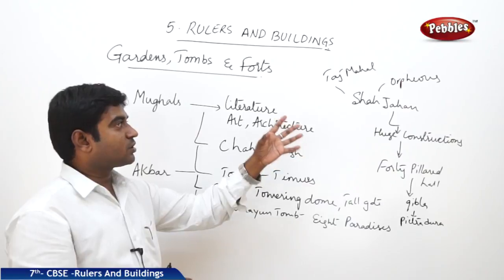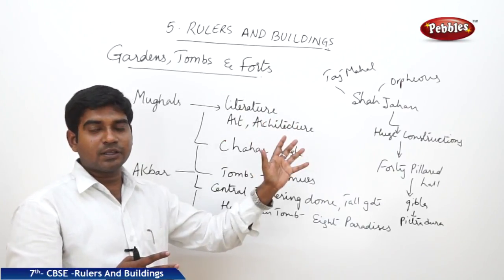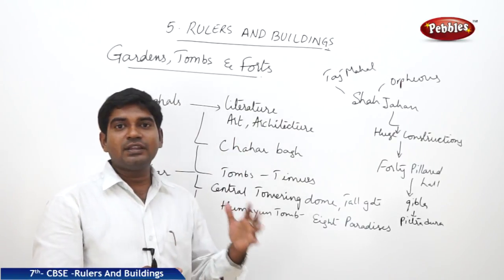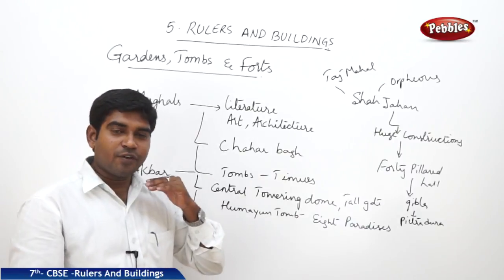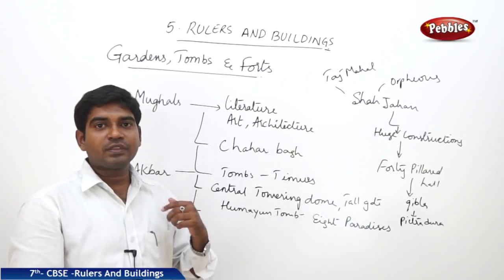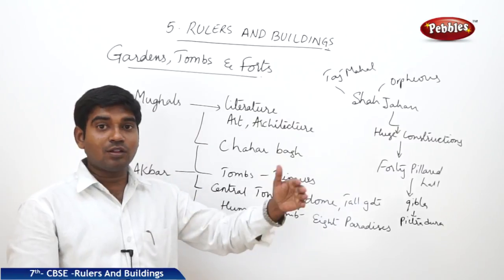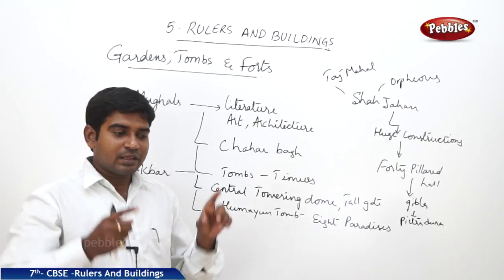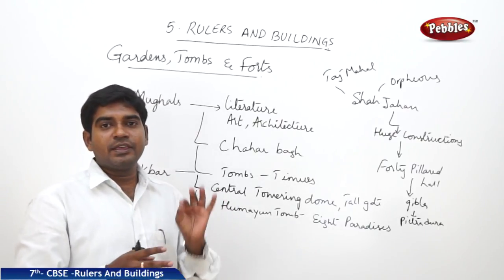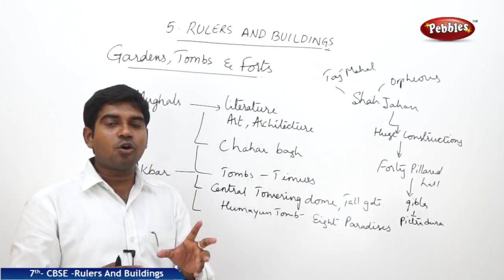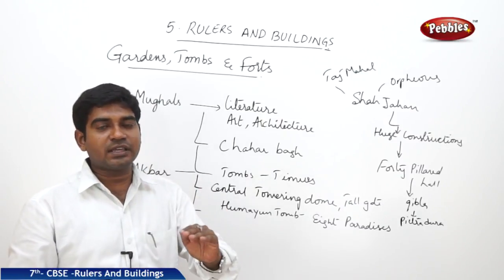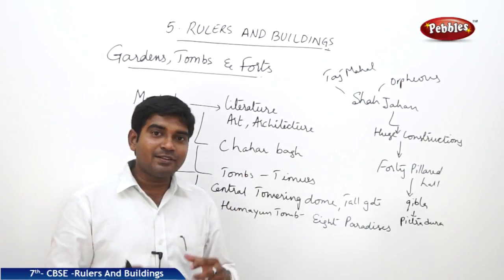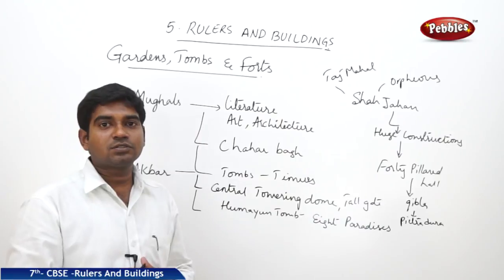Shah Jahan, the constructor of Taj Mahal, did not only construct the Taj Mahal — he also constructed many gardens and huge constructions. He constructed a very big town hall or meeting hall with 40 pillars, where everybody was treated equally. This construction showed that he wanted the rich and the poor to be treated equally, and that message was to be sent to everybody. He placed his throne at a place called Qibla, a very safe place on a higher elevation.